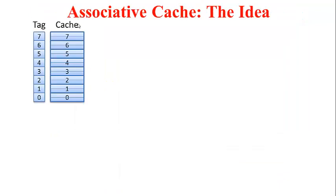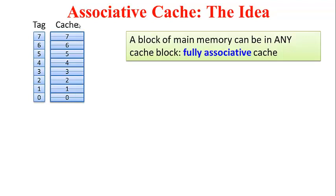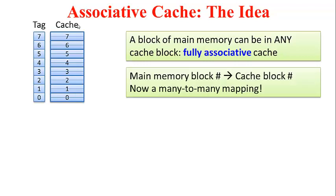Having identified the problem, let's see how we can fix it. Since the main culprit is the many-to-one mapping, the idea of associativity essentially fixes that. Now we are going to say that a block of main memory can reside in any cache block — the mapping from main memory block number to cache block number is now a many-to-many mapping. This scheme goes by the name of fully associative cache.